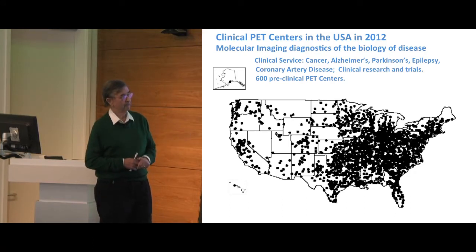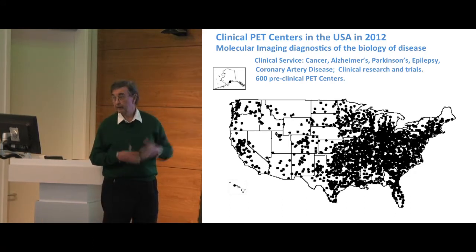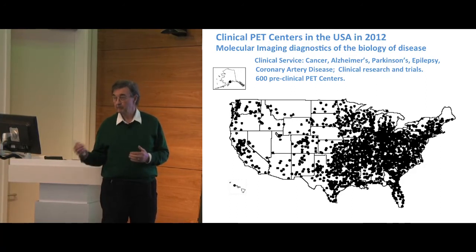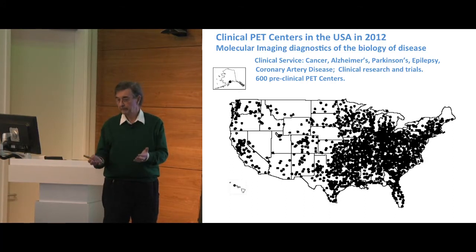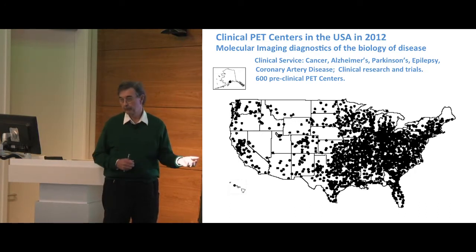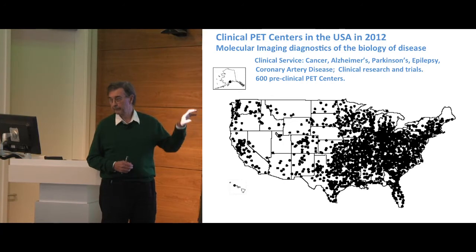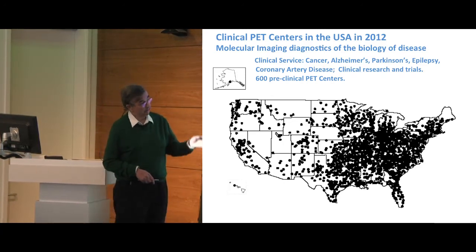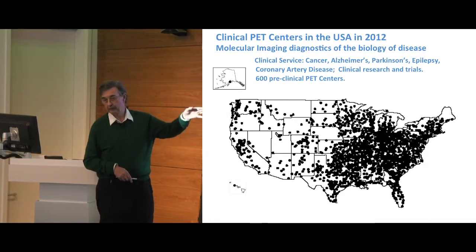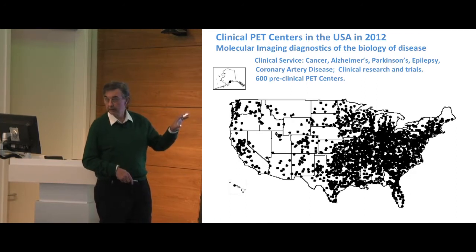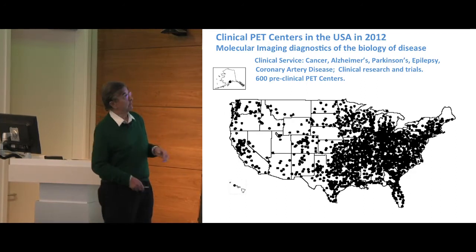Beyond that, all these PET centers in America were connected in a network. Initially, that was a contract we wrote with Medicare and Medicaid to deal with evidence-based approval on reimbursement. But then it became a trial for drug studies or probes, all built through that. And Medicare paid for it. There are now 300,000 patients in that trial with PET studies, giving us flexibility for doing clinical trials.